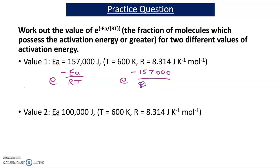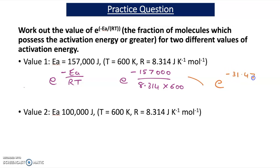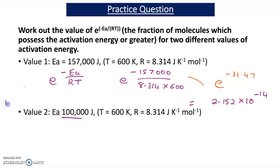For the first set of data, we calculate e^(-157000 / (8.314 × 600)). This simplifies to e^(-31.47). Working that out gives a fraction of molecules which possess the activation energy or greater equal to 2.152 × 10^(-14).